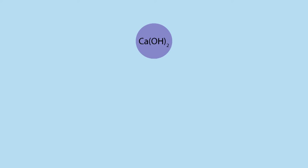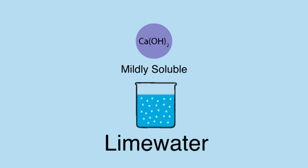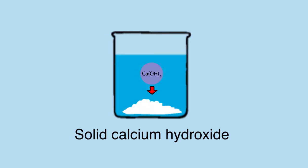Calcium hydroxide is mildly soluble in water. The solution is known as lime water and is used to test for carbon dioxide. If you've ever looked closely at lime water, there is a white precipitate at the bottom of the container. This is solid calcium hydroxide.